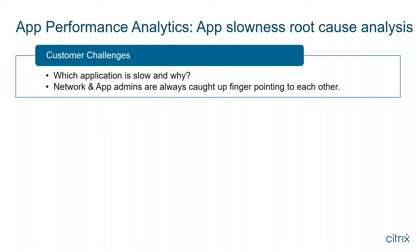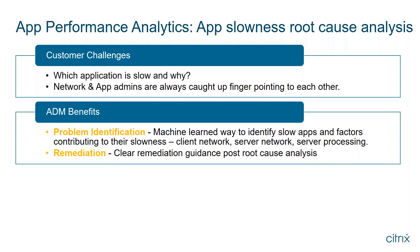The challenge is finding which application is slow when you manage a multitude of enterprise applications. Network and app admins constantly struggle with finger-pointing: is the problem at the network side, server latency, backend server processing time, or client lag? This use case solves it by giving clear identification of all slower apps and the factors contributing to slowness — client network latency, server network latency, and server processing time — with remediation guidance post root cause analysis.